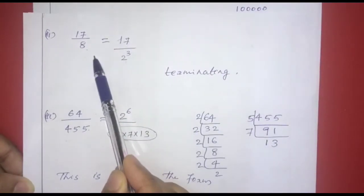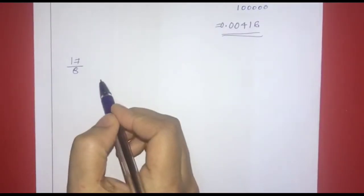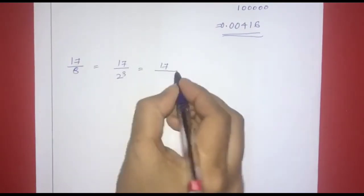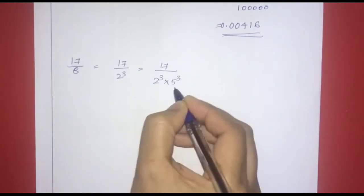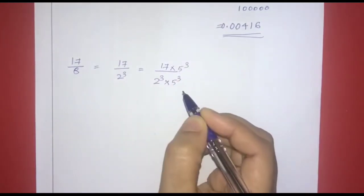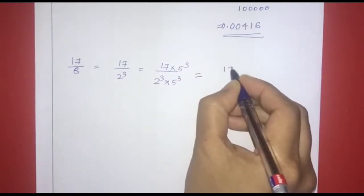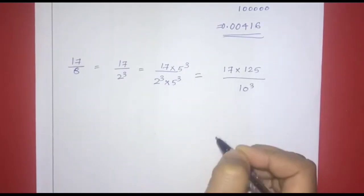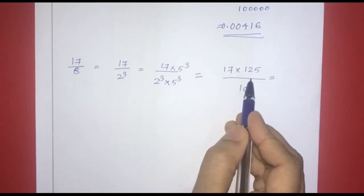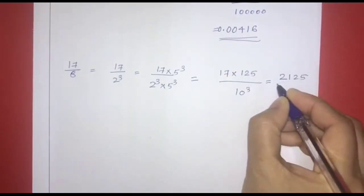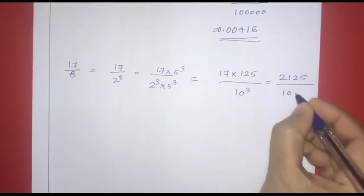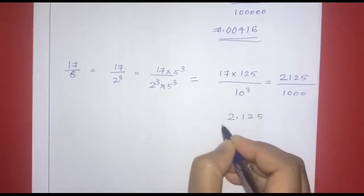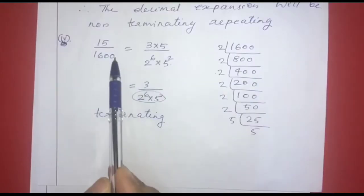For 17 by 8, which equals 17 by 2 raised to 3: we multiply numerator and denominator by 5 raised to 3. That gives 17 into 125 divided by 2 raised to 3 into 5 raised to 3, which equals 2125 divided by 10 raised to 3 — that is 1000. We place the decimal 3 places from the right, giving 2.125.